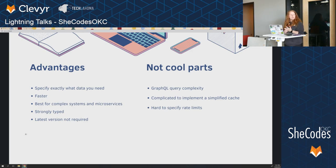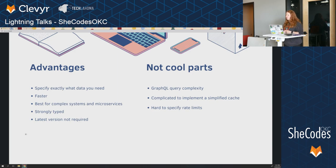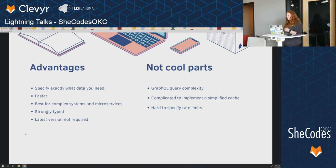GraphQL is also faster and good for complex systems and microservices. It is strongly typed, which can be a good or bad thing if you're on the TypeScript versus JavaScript debate. You also don't always have to have the latest version installed — it will work with old GraphQL versus new GraphQL. Some downsides: your calls can get huge and complicated because of nesting and arrays. It's also complicated to implement a cache because GraphQL doesn't cache very well — it runs on the information right now. And that makes it hard to specify rate limits, so your API can just get bombarded and it's hard to make it slow down.